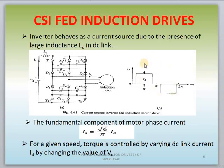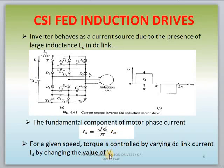By analyzing this current source using Fourier series, we can identify that the fundamental component of motor phase current is IS = √6/π × Id. IS value depends upon Id value, and Id value depends upon Vd value, because by changing Vd only we are getting Id. With that, you can easily control IS value, and controlling IS means we can easily vary the torque value, allowing speed control of the induction motor.